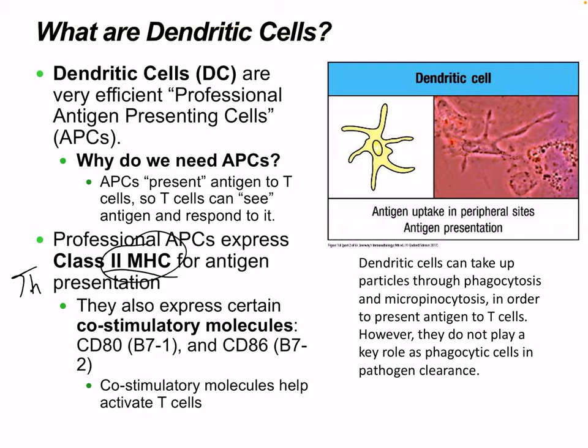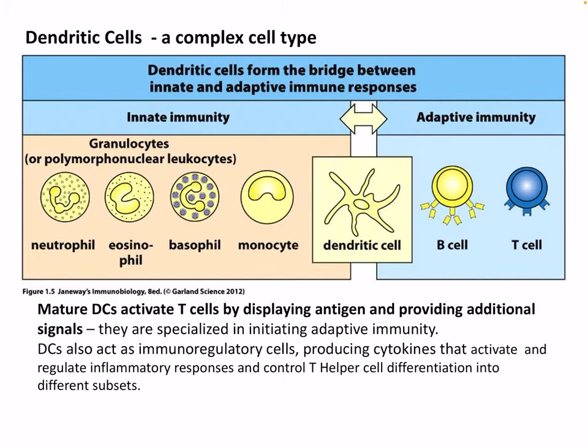Dendritic cells are essentially the key bridge between the innate and adaptive systems. Mature dendritic cells activate T cells by displaying antigen and providing additional signals, and are specialized in initiating adaptive immunity. Dendritic cells also act as immunoregulatory cells, producing cytokines that activate and regulate inflammatory responses, and control helper T cell differentiation into different subclasses.